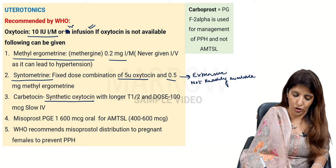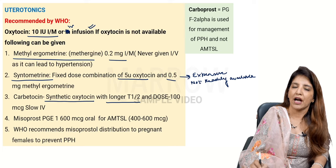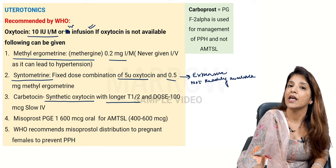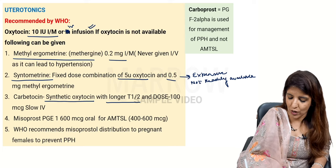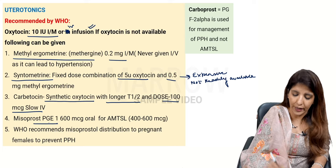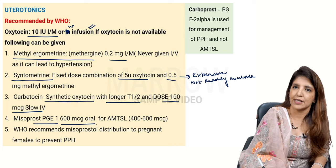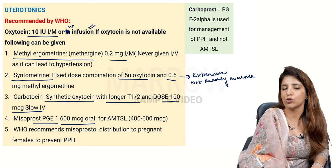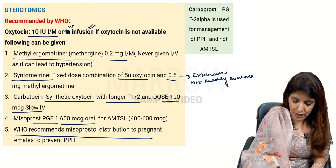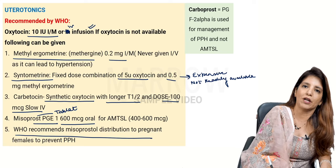Carbytocin is a synthetic oxytocin with a longer half-life. The normal T-half of oxytocin is very short — three to five minutes. The dose of carbytocin is 100 micrograms slow IV. Misoprostol, which is PGE1, can be given at 600 micrograms orally for AMTSL. Latest reports also suggest 400 to 600 micrograms. Misoprostol is the only uterotonic available in tablet form.